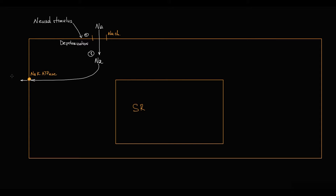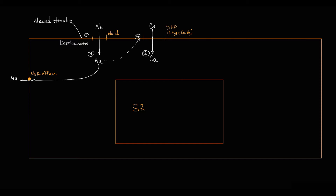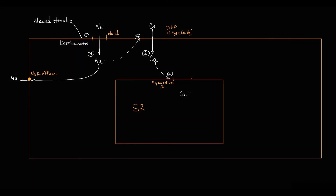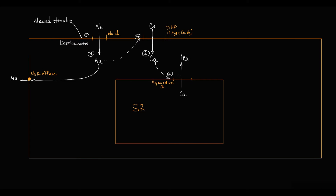Depolarization activates dihydropyridine receptors, which are L-type calcium channels, and calcium flows into the cell by concentration gradient, increasing the intracellular calcium level. Increasing calcium in the cytosol activates ryanodine channels on the endoplasmic reticulum, and calcium stored in the endoplasmic reticulum massively flows into the cytosol. This process is called calcium-induced calcium release.